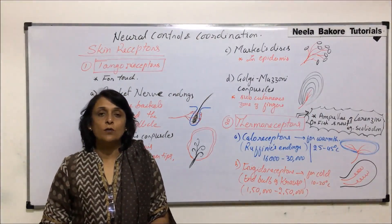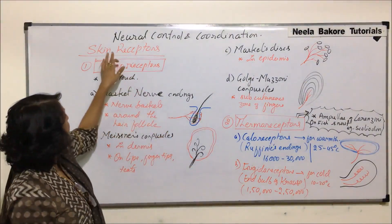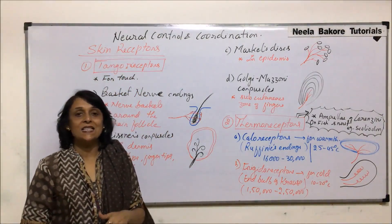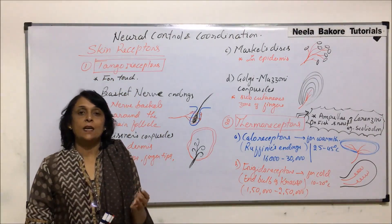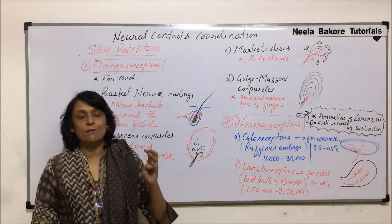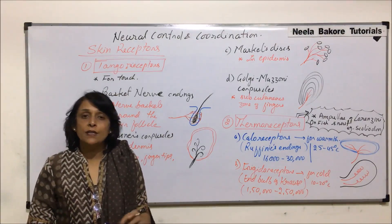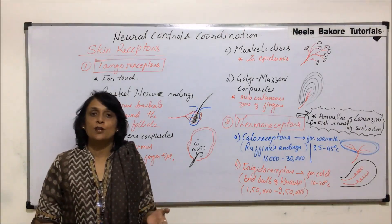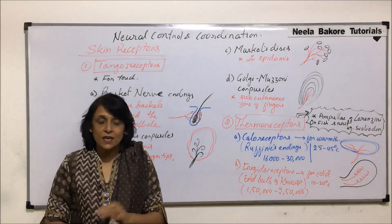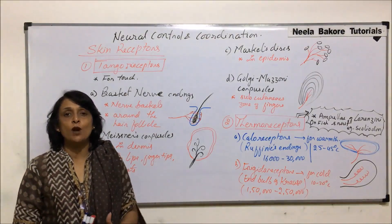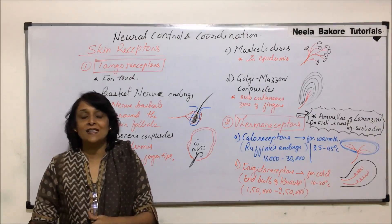In the previous segment we talked about a brief classification of all the types of receptors. Here we are starting with skin receptors. Skin as a sense organ is able to perceive various kinds of stimuli — it can perceive touch, all types of touches, gentle or hard pressure, temperature variations like warmer or cooler temperature, and pain whenever there is a prick. So skin has many different types of receptors and we are going to classify them according to the stimulus which these skin receptors perceive.